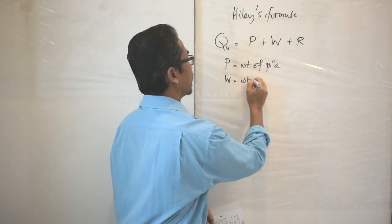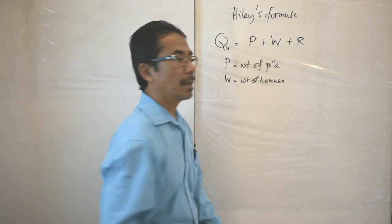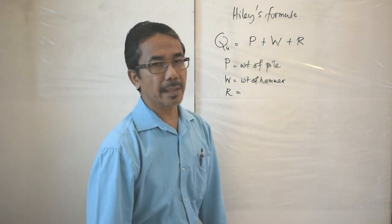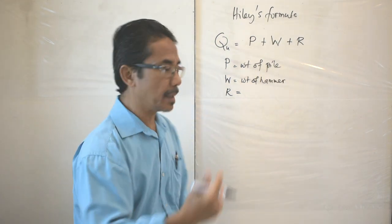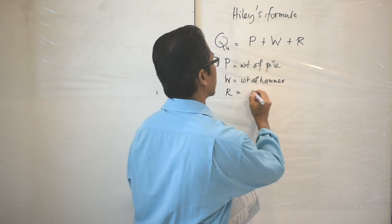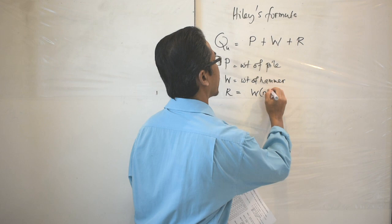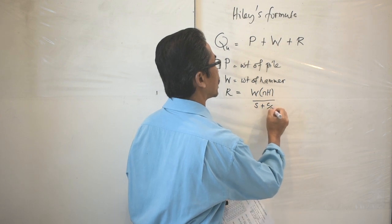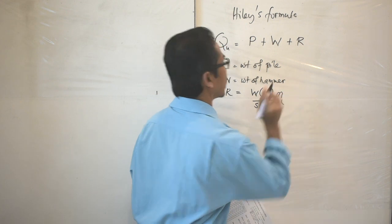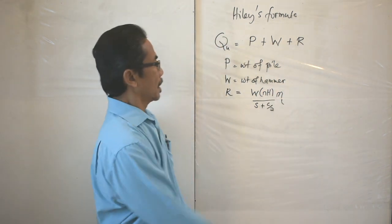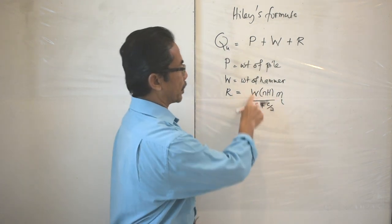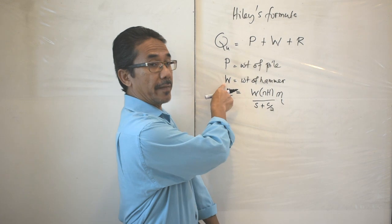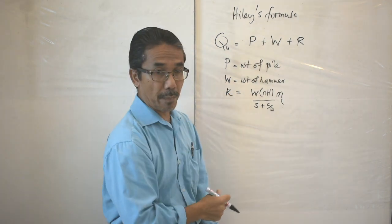W is the weight of the hammer used to drive the pile. R is related to the energy transferred from the hammer to the pile and the soil, expressed as: R = W × n × H / (s + c/2) × η. The W in R is the weight of the hammer, same as the W previously defined.